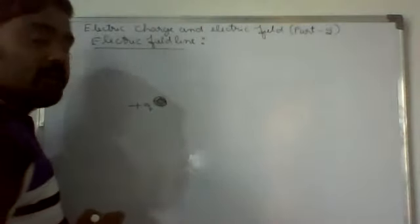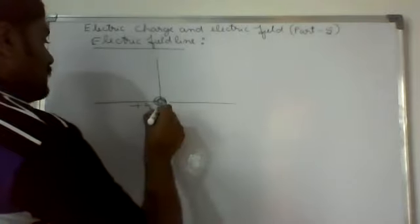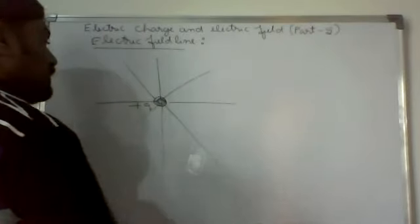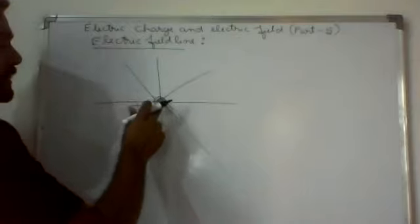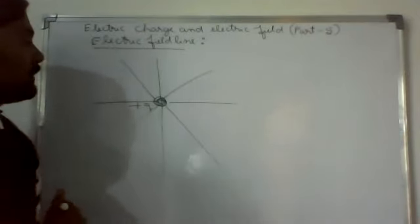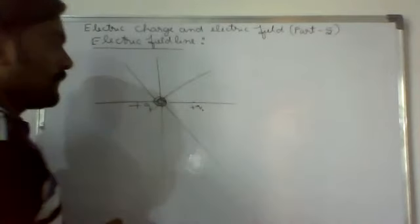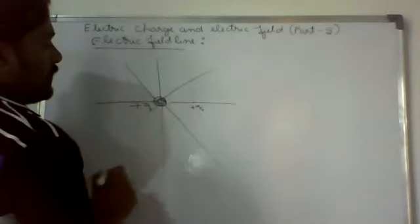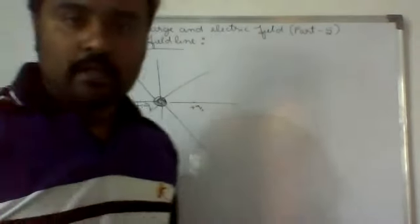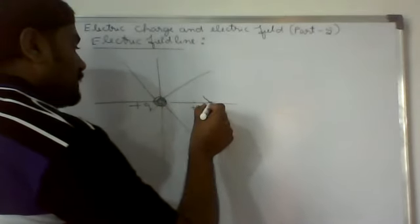Let us consider an isolated positive point charge. These are the imaginary lines around the isolated positive point charge. Suppose a unit positive test charge, plus q-naught, is placed in this line. Due to plus q, the plus q-naught — the unit positive test charge — experiences a repulsive force directed away from plus q.